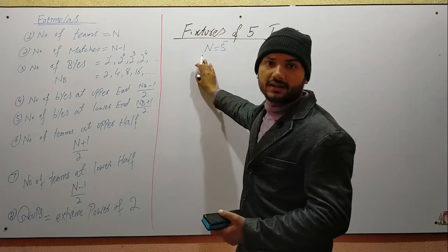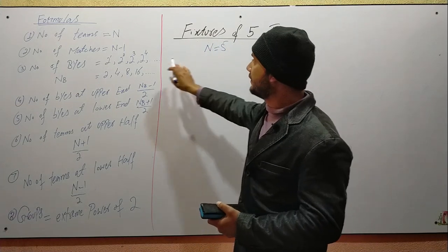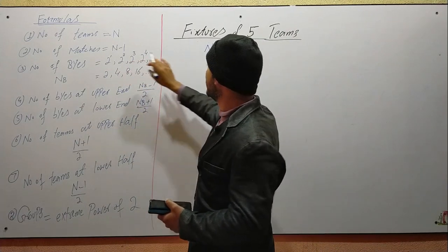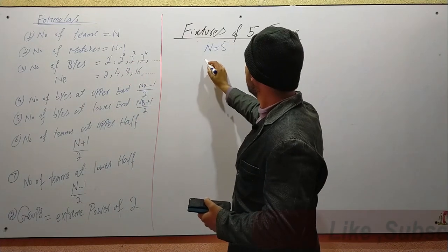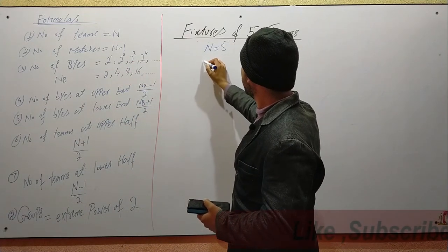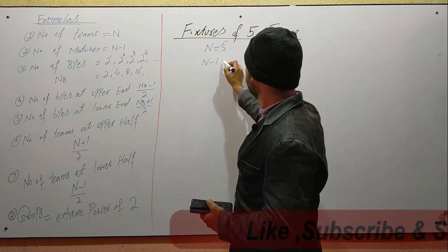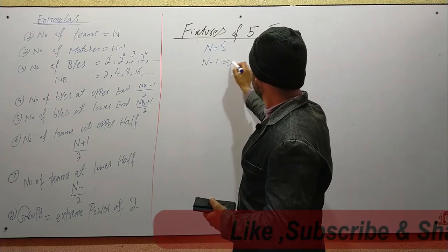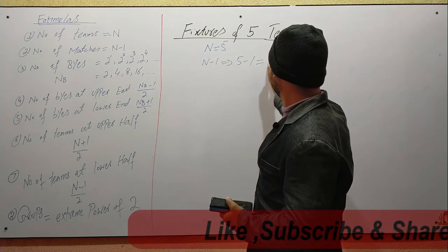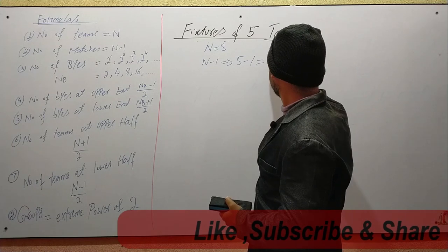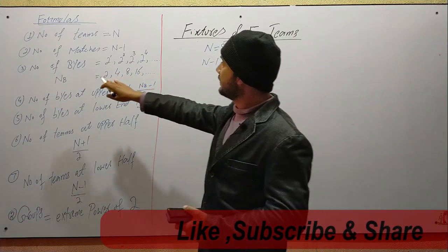Number of teams is capital N. From N, the number of matches is equal to N minus 1. So 5 minus 1 is equal to 4 matches.